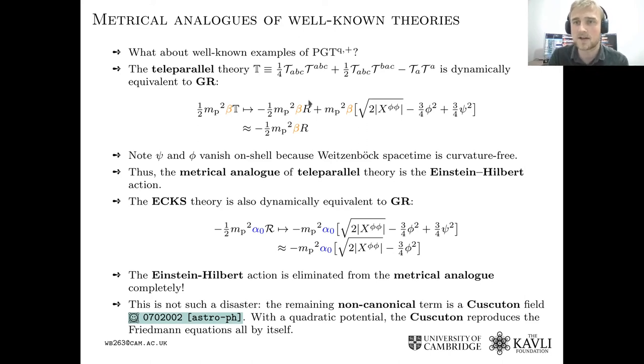So we ask what is the metrical analog of teleparallelism? So we impose the constraints on the metrical analog and we find that we have the Ricci scalar and added to that some scalar terms, non-canonical scalar terms. But the Weitzenböck spacetime assumption means that you can actually write those off on shell. So you ask that the spin connection be a pure gauge and these terms vanish. So you just get the Einstein-Hilbert Lagrangian back, which is quite satisfying because teleparallelism maps directly to the Einstein-Hilbert Lagrangian. So you know that it's just going to give you exactly the same cosmological phenomenology as general relativity, which makes perfect sense.